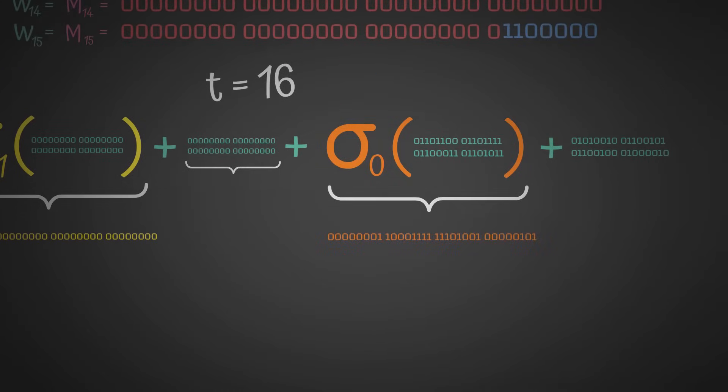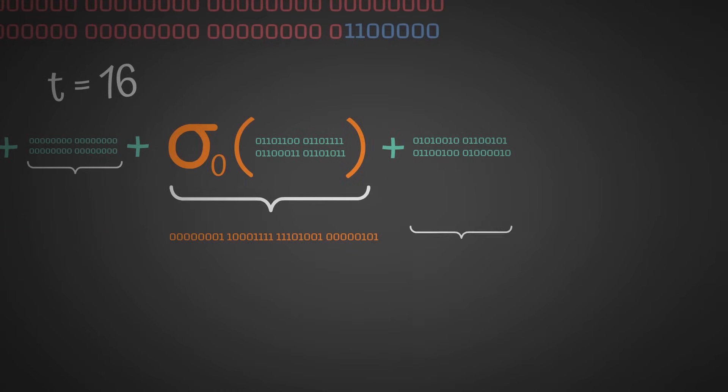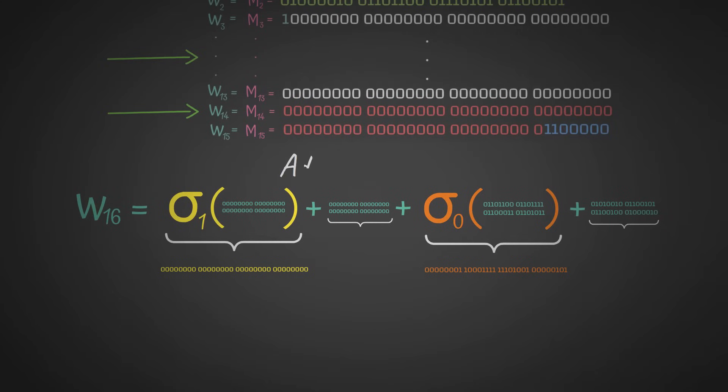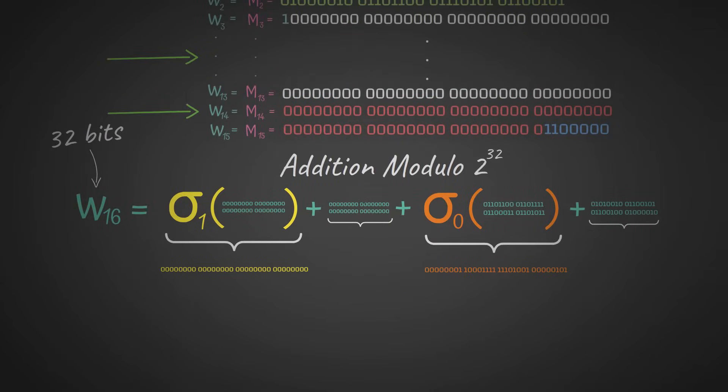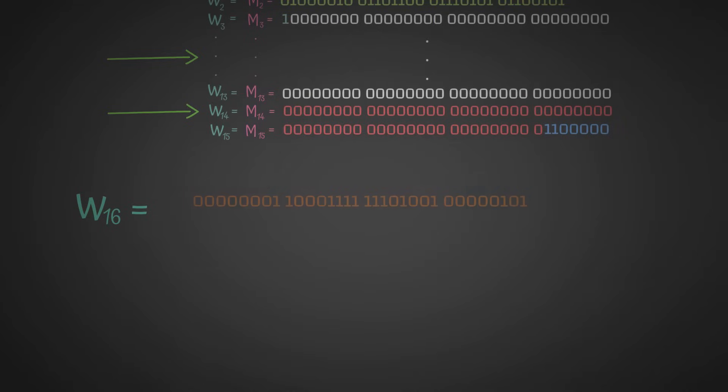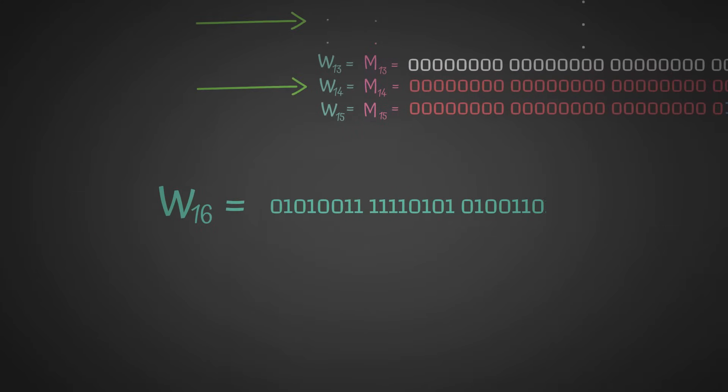We'll put that here in orange, and then we have this end term as well. What we're going to do now is addition modulo 2 to the 32. The reason we're doing this modulo 2 to the 32 is to ensure that W16 here is 32 bits in length. The first two terms are 0, so we can ignore them. If we add these two 32 bits on the right here modulo 2 to 32, we end up with this. That is our W16.